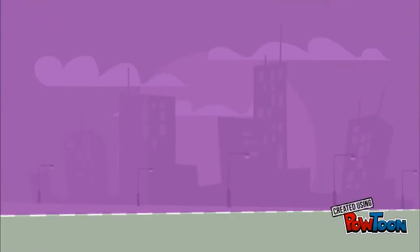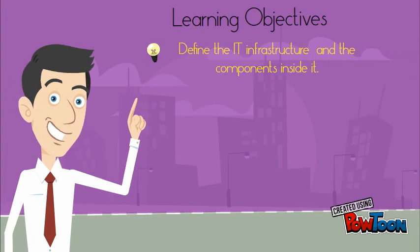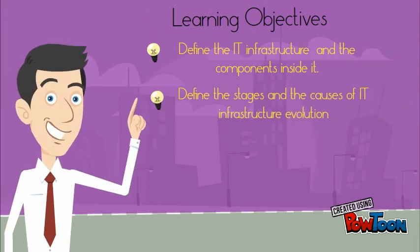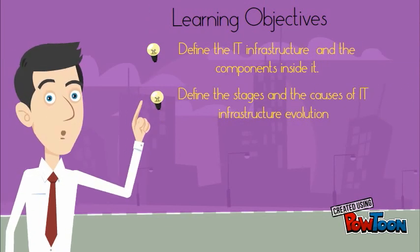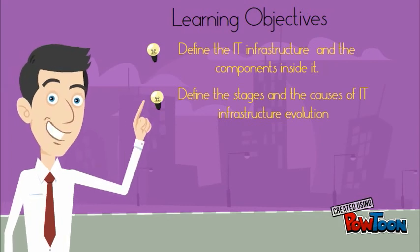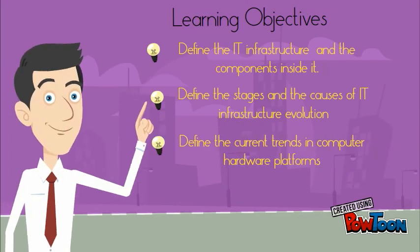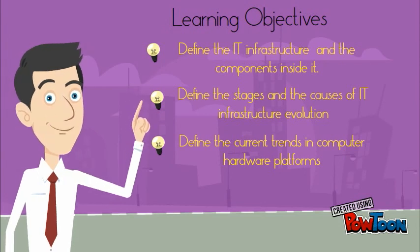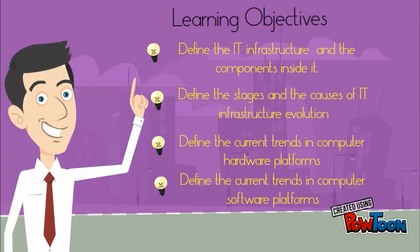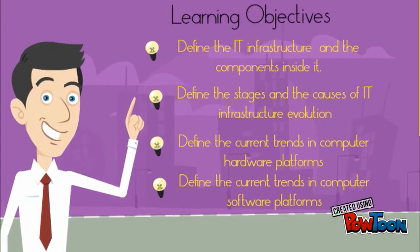There are four learning objectives in Chapter 5. First, define the IT infrastructure and the components. Second, define the stages and the causes of IT infrastructure evolution. Third, define current trends in computer hardware platforms. Last, define current trends in computer software platforms.